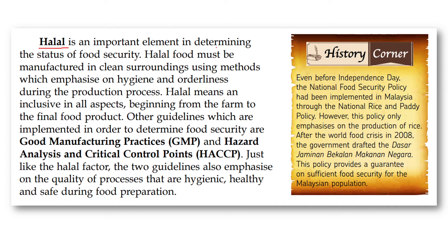Halal is an important element in determining the status of food security. Halal food must be manufactured in clean surroundings using methods which emphasize hygiene and orderliness during the production process — from the farm to the final food product. Other guidelines used to determine food security include Good Manufacturing Practices (GMP) and Hazard Analysis and Critical Control Points (HACCP).